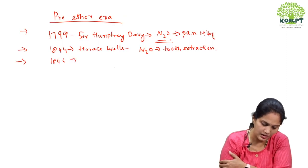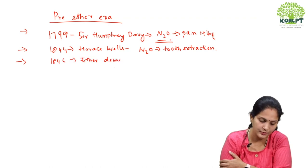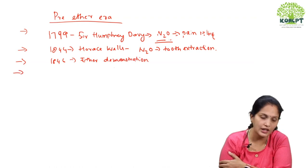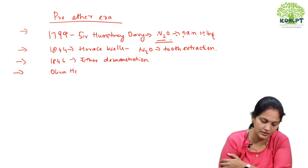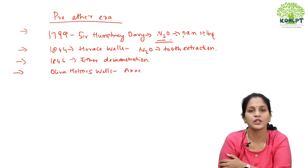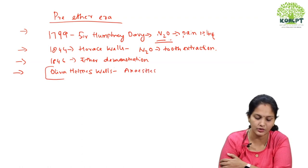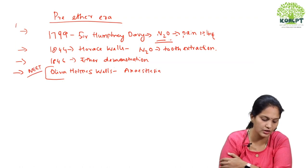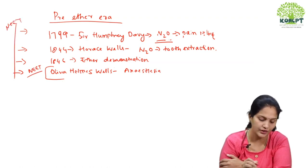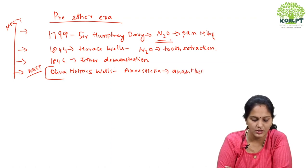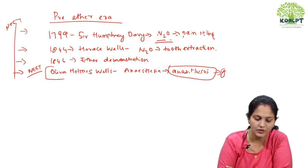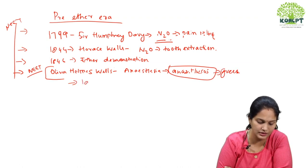Then in 1846, the ether demonstration was done. After that, Oliver Holmes Wells introduced the term 'anesthesia' — this is an important question asked in exams many times. The term anesthesia comes from 'anastos,' a Greek terminology which means lack of sensation.